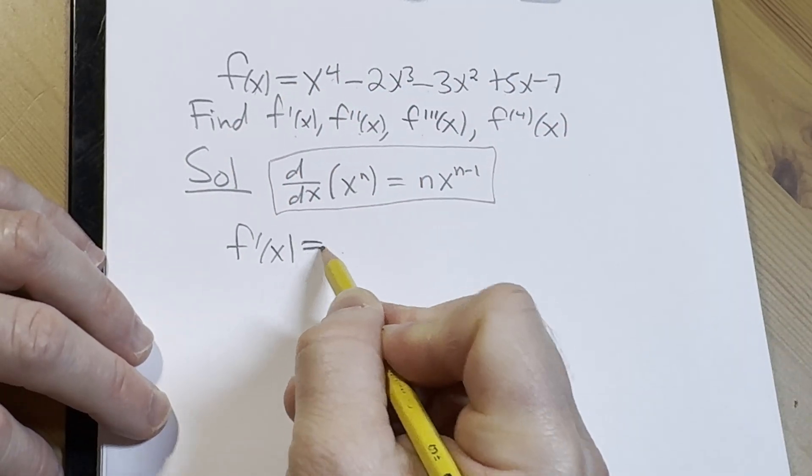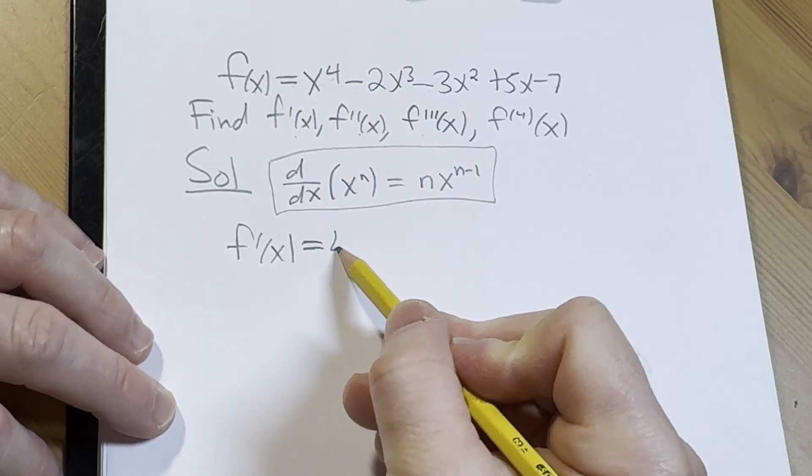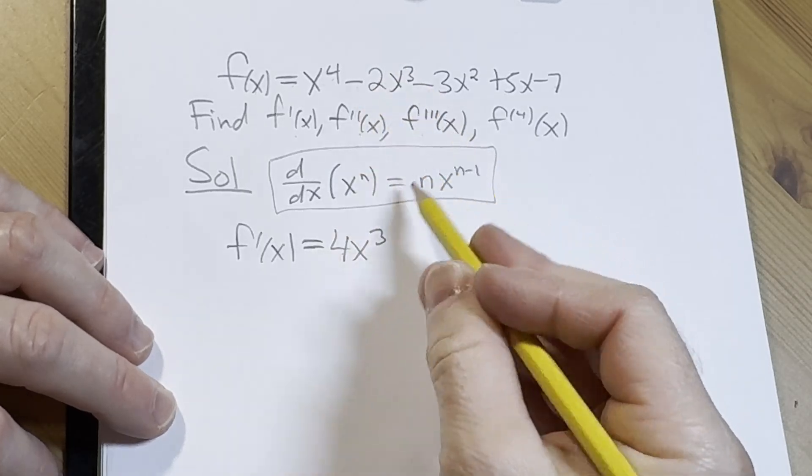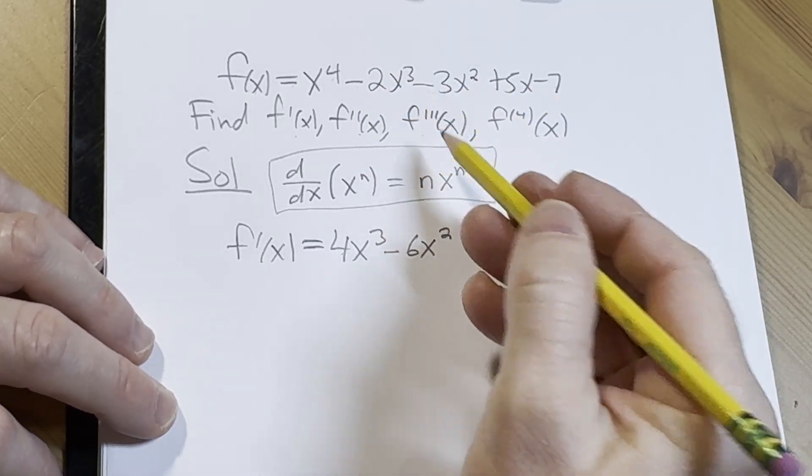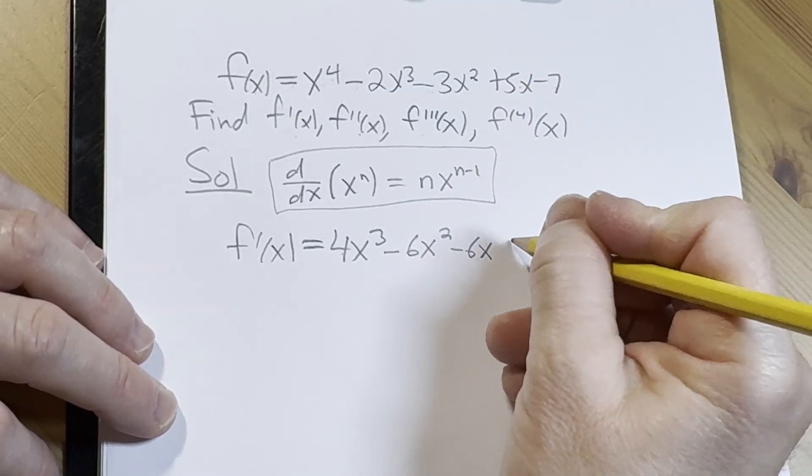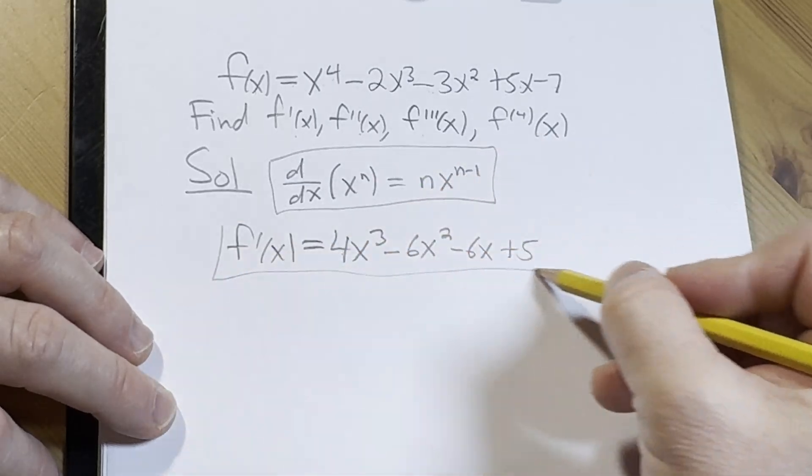So f'(x). Starting with x to the fourth power, we'll bring down that 4, put it in the front, subtract 1 from the exponent. Bring down that 3, that's going to give us minus 6x^2. Bring down that 2 is going to give us another minus 6x to the first power. Derivative of 5x is 5. Derivative of negative 7 is 0. So there's our first derivative.